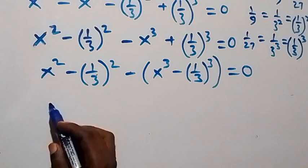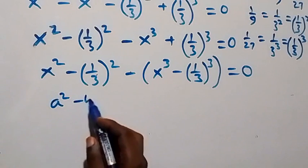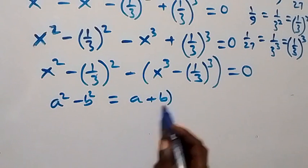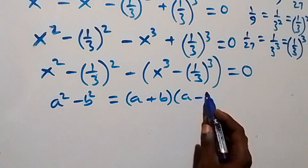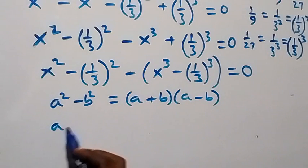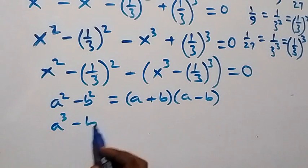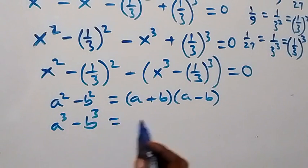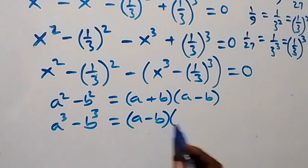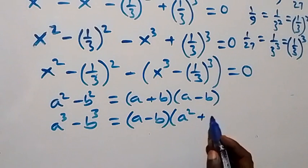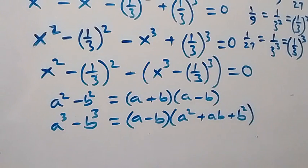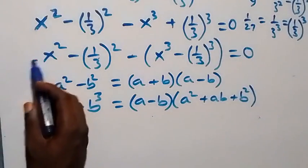From here we have a difference of two squares: a squared minus b squared equals (a + b)(a − b). And we have a difference of two cubes: a cubed minus b cubed equals (a − b)(a squared + ab + b squared). We apply these to what we have here.